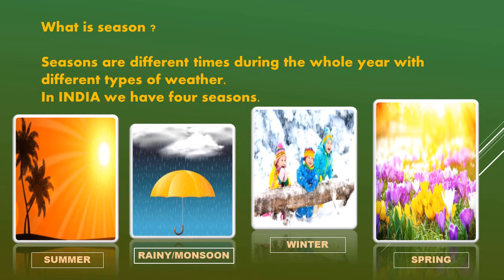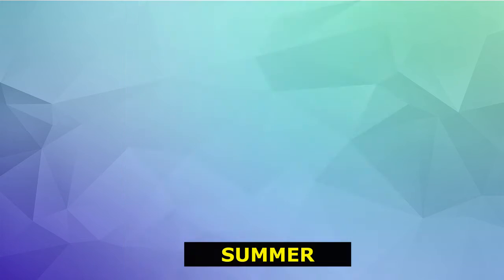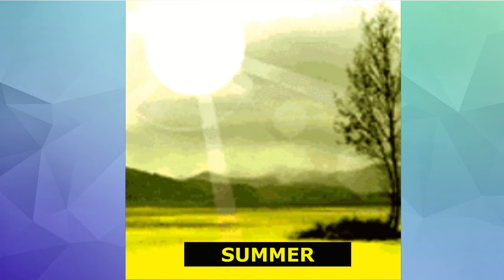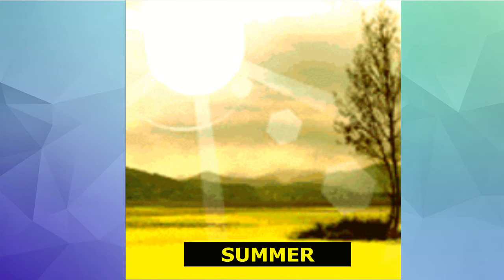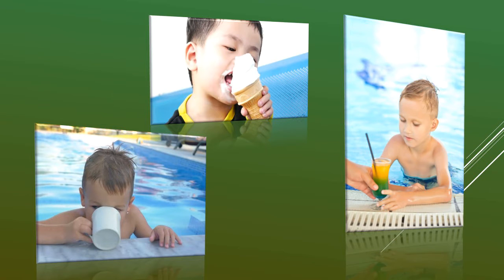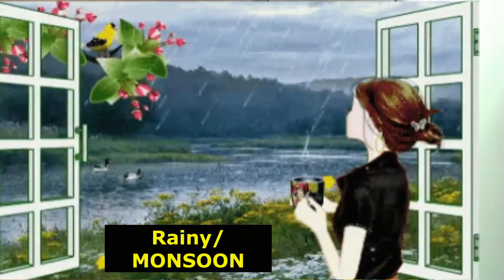Let's understand seasons one by one. The first season is summer. It is the hottest season of the year. The sun rays are so strong that we feel hot in this season. In this season, we like to eat and drink cold things like ice cream, cold drinks, juices, etc., and wear cotton clothes.